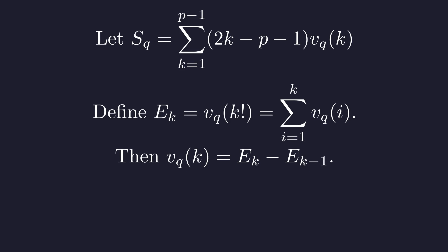Here's the setup: let E_k be the q-adic valuation of k factorial. Think of E_k as the total q content that's built up by the time we've multiplied together all numbers from 1 to k. With this definition, v_q of k is just the difference between consecutive E values—it's the new q content contributed by the number k itself.